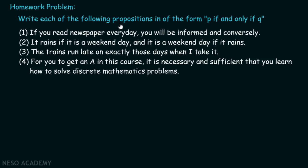Now it's time for the homework problem. Write each of the following propositions in the form P if and only if Q: (1) If you read the newspaper every day, you will be informed, and conversely. (2) It rains if it is a weekend day and it is a weekend day if it rains. (3) The trains run late on exactly those days when I take it. (4) For you to get an A in this course, it is necessary and sufficient that you learn how to solve discrete mathematics problems. You can post your answers in the comments section below.